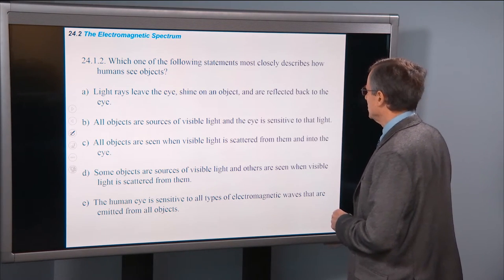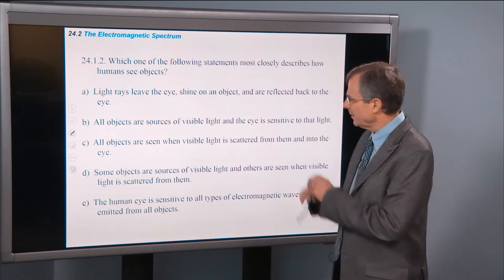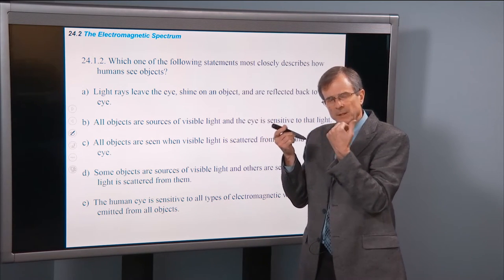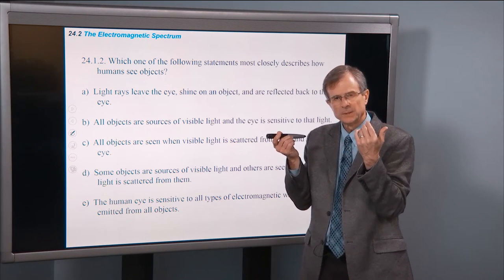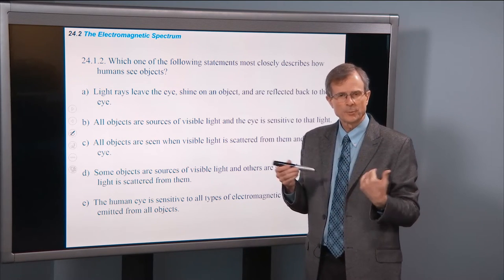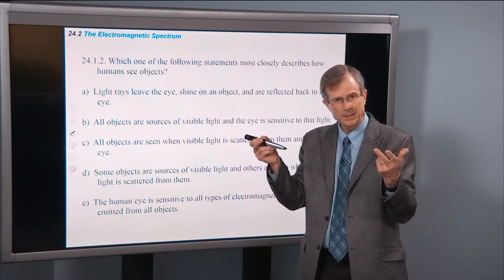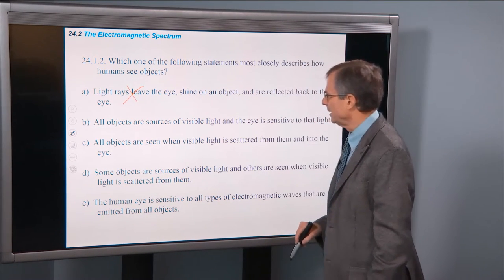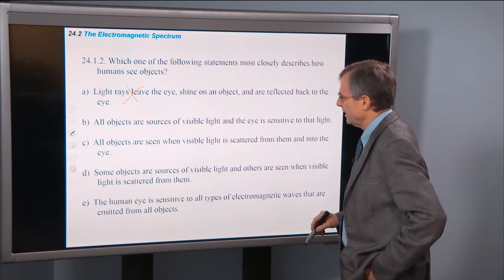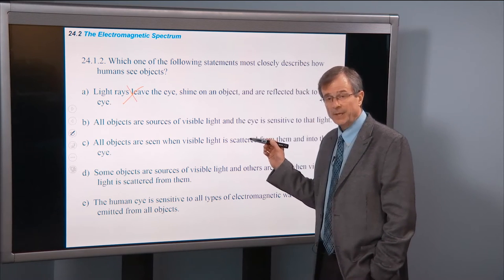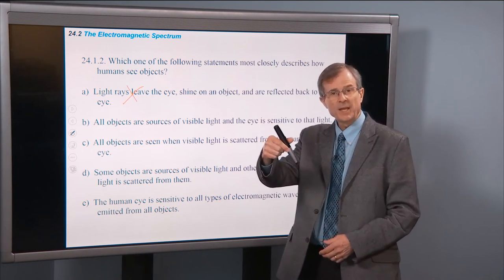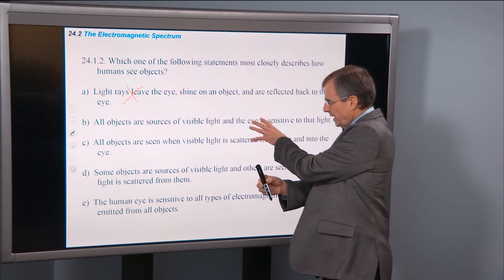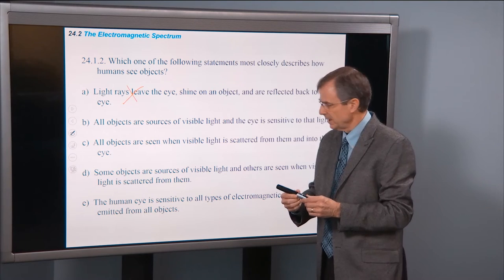Which of the following statements most closely describes how humans see objects? Light rays leave the eye, shine on an object, and are reflected back into the eye. Well that would mean that the eye is a source of light. Is that true? Well actually no. Because you can turn the lights out in this room, or any room, and you're going to look at somebody else's eyes and you can't see any light coming from them. So our eyes are not sources of light. All objects are sources of visible light, and the eye is sensitive to that light. Well, this glowing screen is a source of visible light. But this pen is not. It can only be seen by light that's reflected from other lights in this room. Lights from the screen, lights from overhead, etc. So that's not true either. Not all objects are sources of visible light.